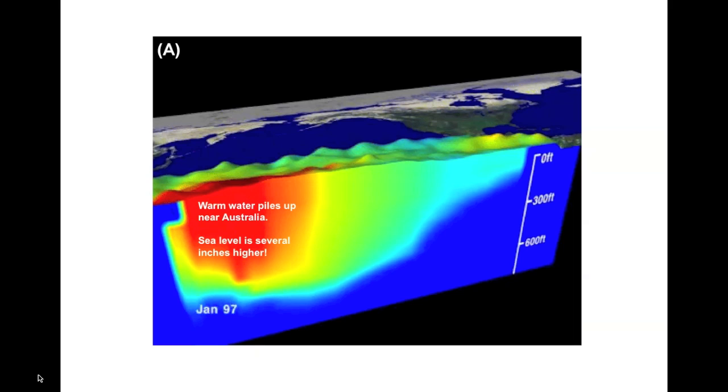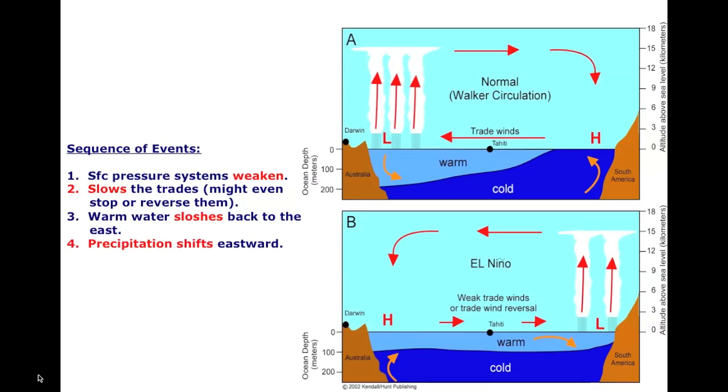So now that we've seen what the ocean and atmospheric circulations look like when things are normal across the Pacific Ocean, let's look at what happens when an El Niño event takes place. First, the trade winds slacken as the high pressure near Peru and the low pressure near Australia weaken in strength. During strong El Niños, these winds can even stop or actually reverse direction.